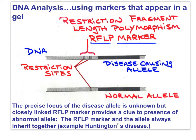Genes have repetitive sequences near them — repetitive sequences on the disease-causing allele differ from those on the normal allele. The restriction enzyme cut sites differ because the repetitive sequences differ, so the fragments produced are different, and analysis of a gel would show these fragment differences as different bands. These varying repetitive sequences that result in different restriction sites are called restriction fragment length polymorphisms, or RFLPs for short. The presence of a band that accompanies an allele is called a marker.